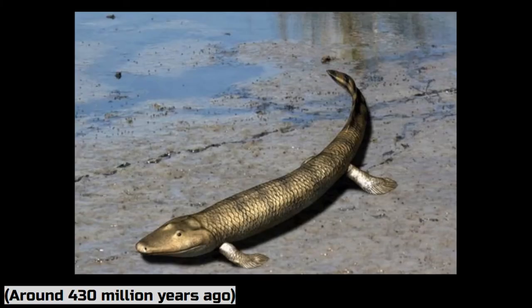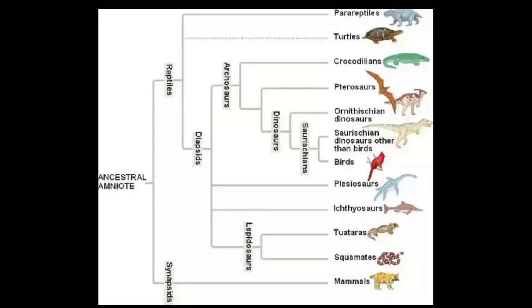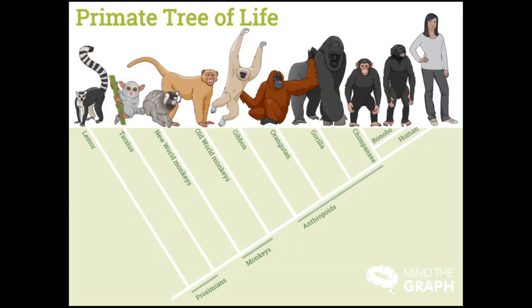Around 430 million years ago, the first fish walked on land, which led to large organisms exiting the ocean. These fish with legs became amphibians, reptiles, and mammals, with some reptiles evolving into birds during the dinosaurs' time on earth. Mammals eventually took the form of primates, which eventually evolved into humans.